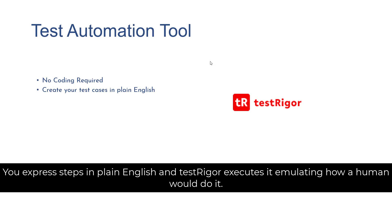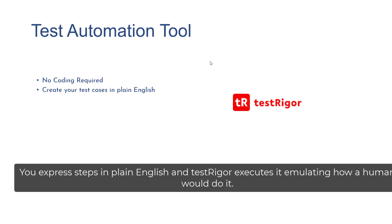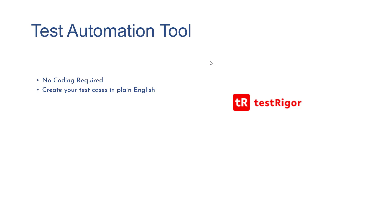Why should we use TestTrigger? There are plenty of different tools available in the market, so what is different in TestTrigger? Basically in TestTrigger you don't need to write any single line of code. You write your test cases just like plain English — like how you test your application manually. In the same way you can write your automated tests using plain English, and you will be able to automate your application.